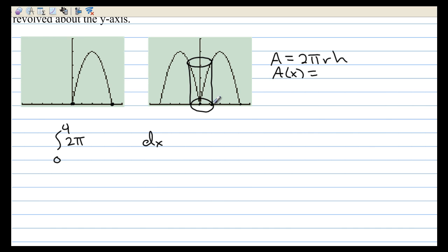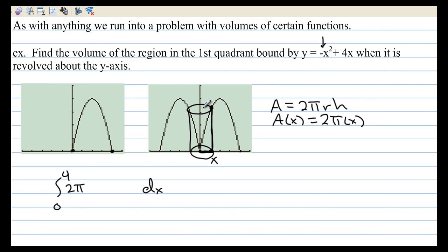If I pick a random x value right here, that distance from 0 to the x value is the radius. So the radius is just x. The height of the cylinder, once I've picked the value for x, is the y value when I plug x into the function. So that's the y value of the function. So it's just negative x squared plus 4x. So that's what we have to integrate. And if I distribute the x through, we get negative x to the third plus 4x squared.